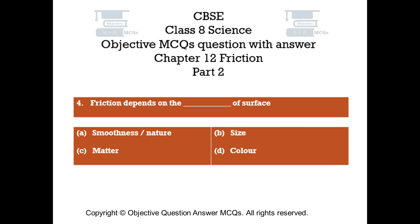Question number 4: Friction depends on the nature of the surface. Option A: Smoothness or nature. Option B: Size. Option C: Matter. Option D: Color.